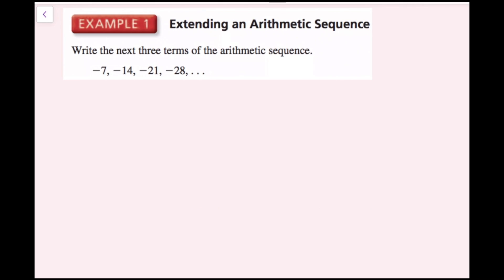For this example, we're going to write the next three terms of the arithmetic sequence. The first thing I'm going to do is find the common difference. You can find the common difference by taking any term and subtracting the previous term. So in this case, I'm going to do negative 14 minus negative 7, which becomes a plus, and then I get negative 7.